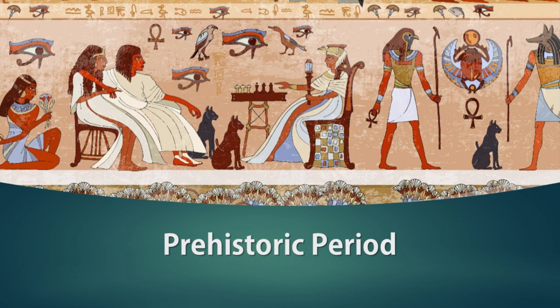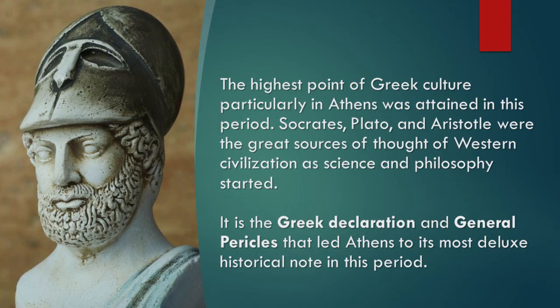First, let's talk about the prehistoric period. There are different artists that emerged during the time, particularly in ancient Greek and ancient Rome. The highest point of Greek culture, particularly in Athens, was attained in this period. Socrates, Plato, and Aristotle were the great sources of thought of Western civilization as science and philosophy started.